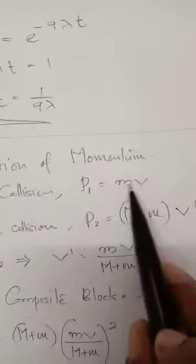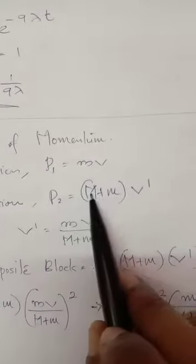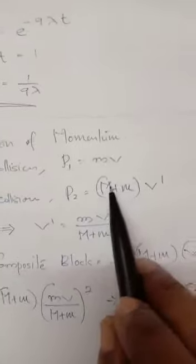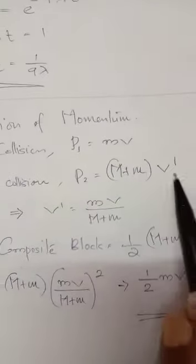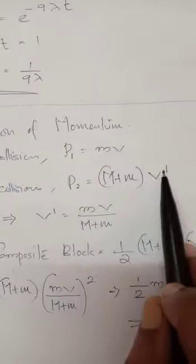Before collision, momentum, bullet momentum, that is mv. After collision, momentum of composite block - bullet is getting embedded, bullet is combined to the system - m plus M times the combined system velocity v dash. Now initial and final momentum are equal, m plus M times v dash.